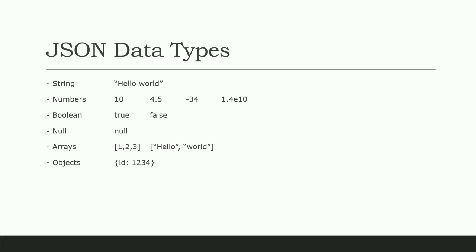So JSON supports string. Numbers — it can be decimal, whole, or negative. It also supports Boolean, which represents true or false. Null, which stands for nothing. Array, which is a combination of the types we have talked about. And Object, which is the most used type of JSON — it is basically a key-value pair. So those are the data types of JSON.